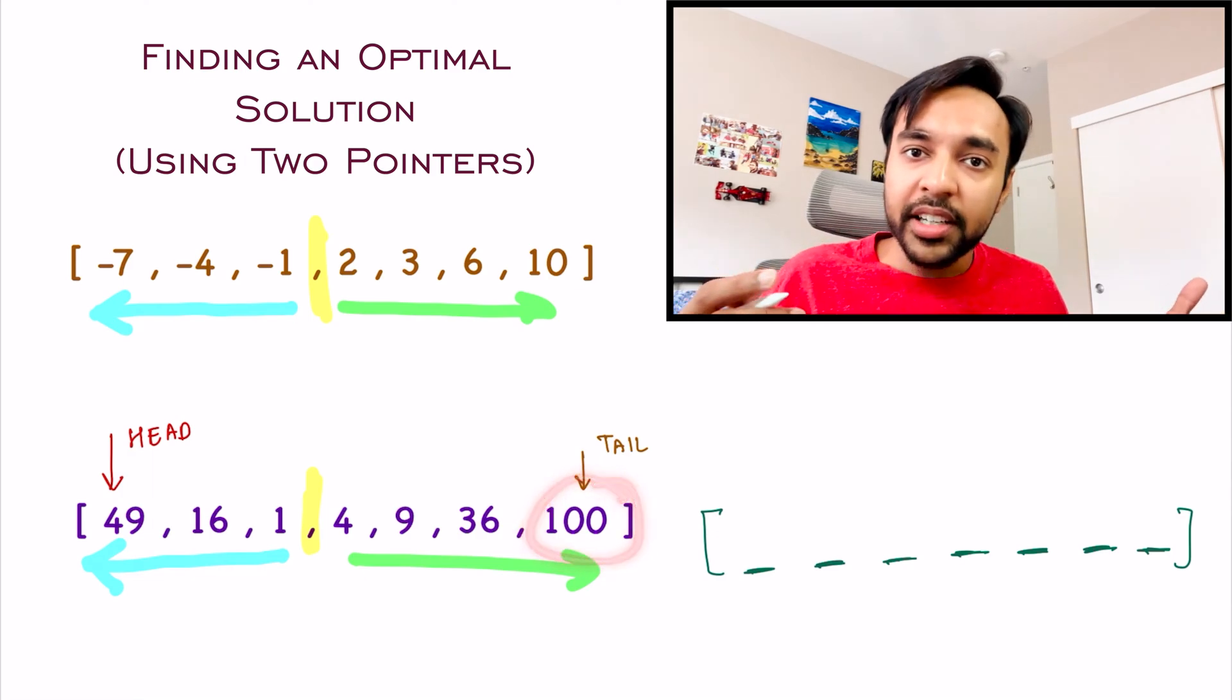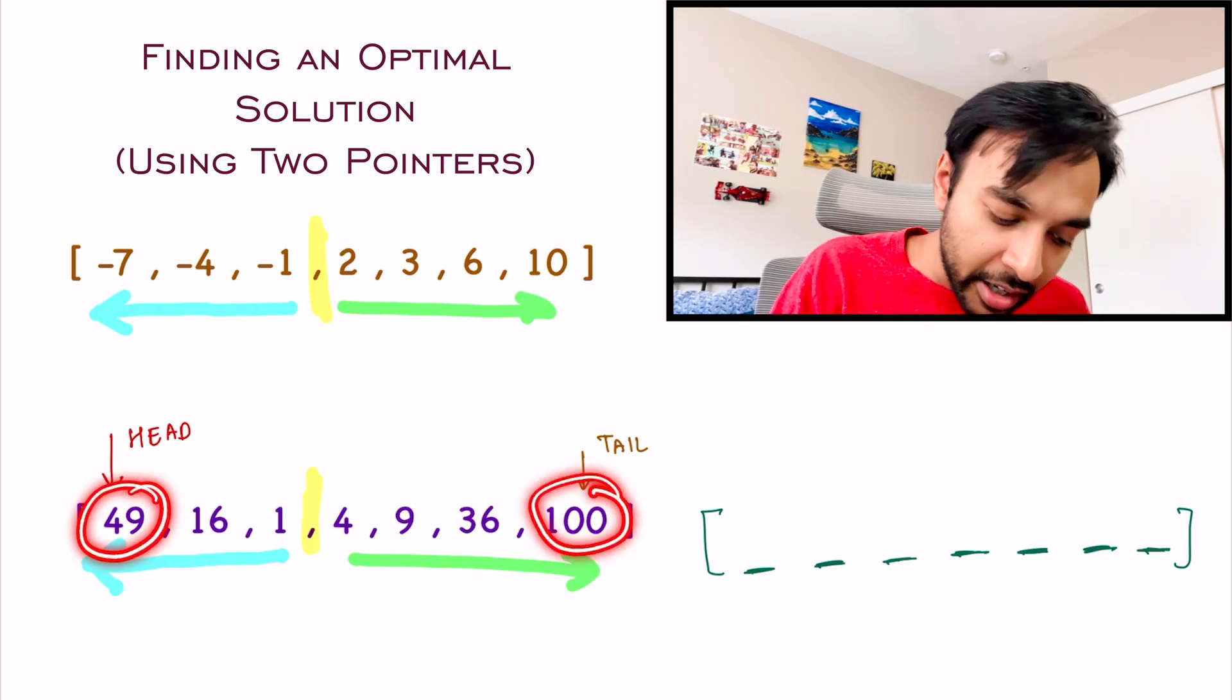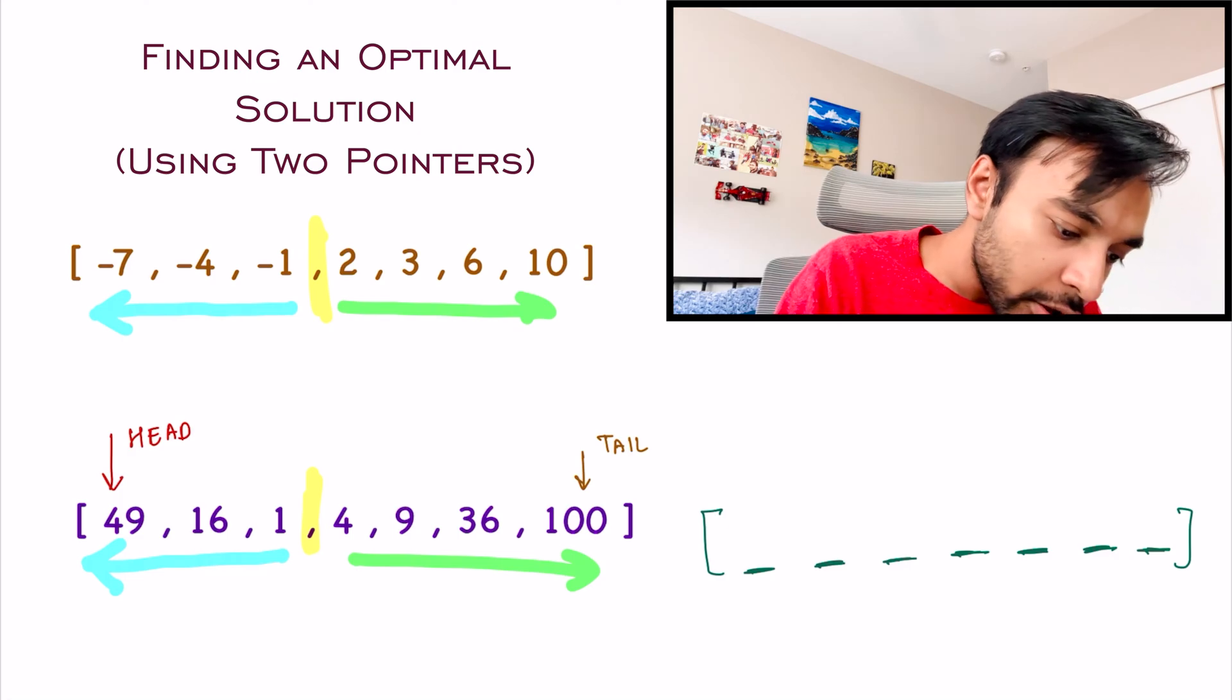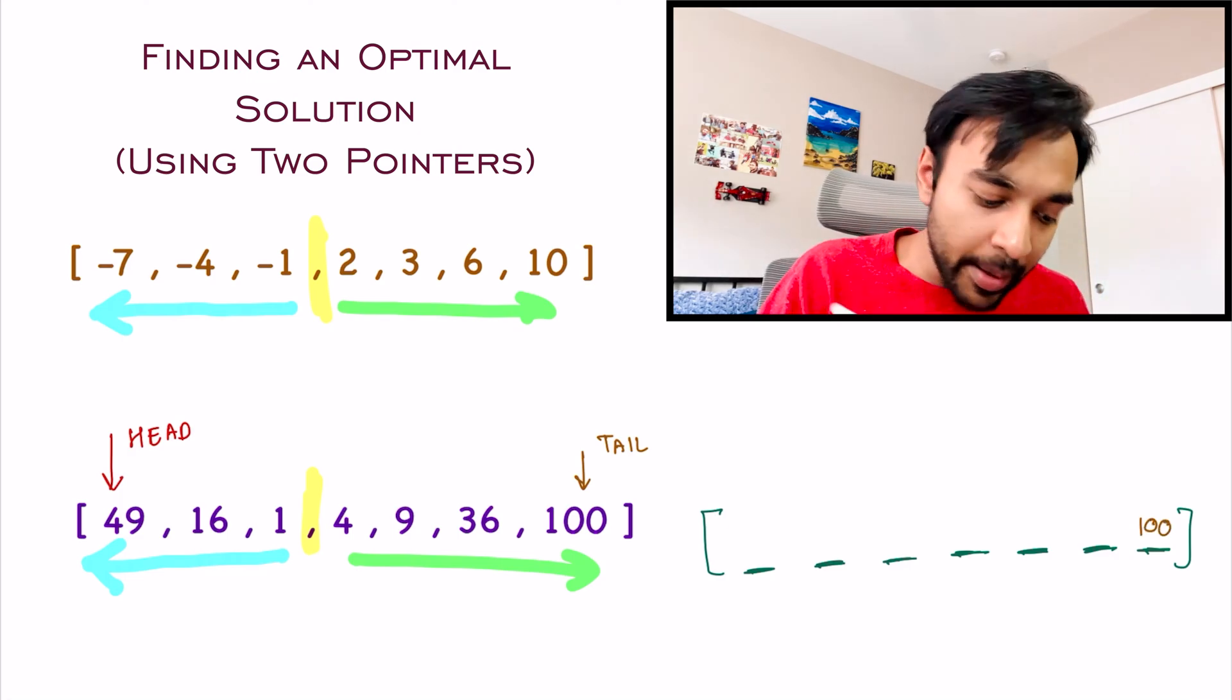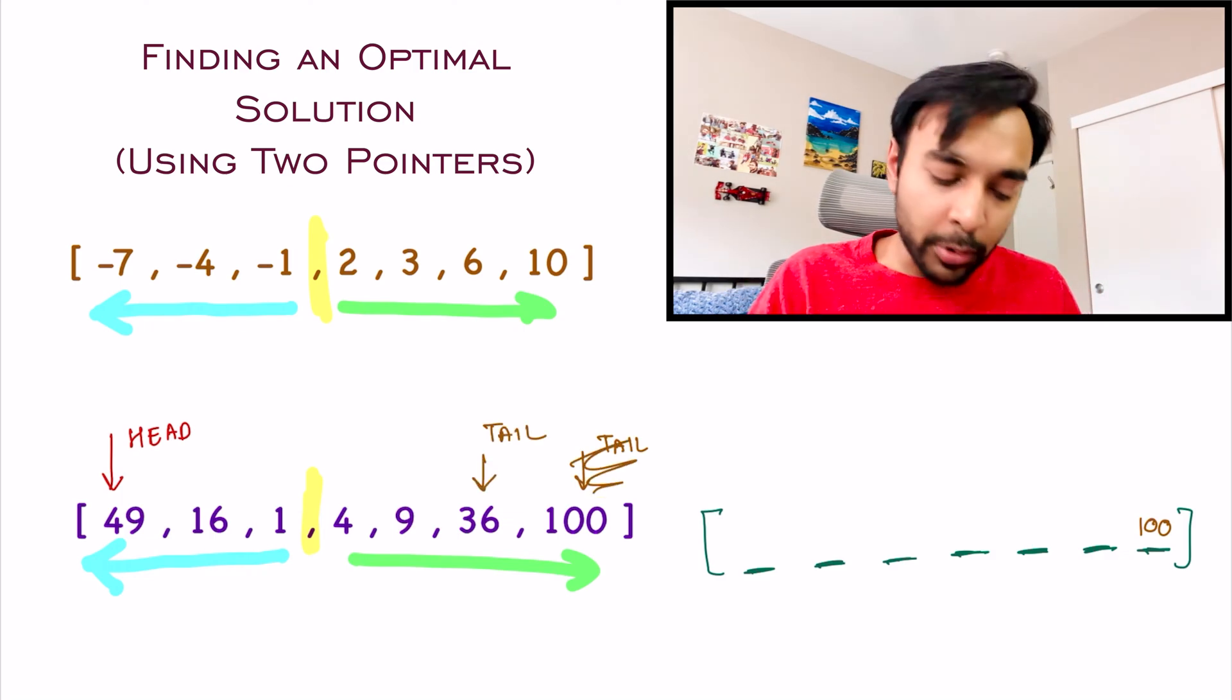So, either this will be the largest element, or this will be the largest element. So, I compare 49 and 100. 100 is greater than 49. So, what I am just gonna do is, I will copy 100 to the end of this result array, and I will move my tail pointer one position back. Now, repeat this process. Compare tail and head. This time, 49 is greater than 36.